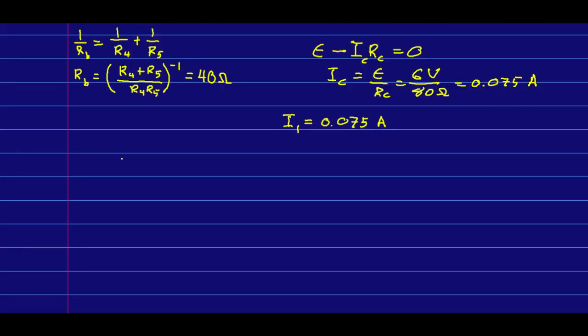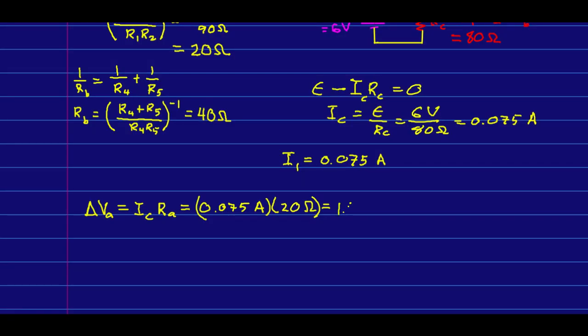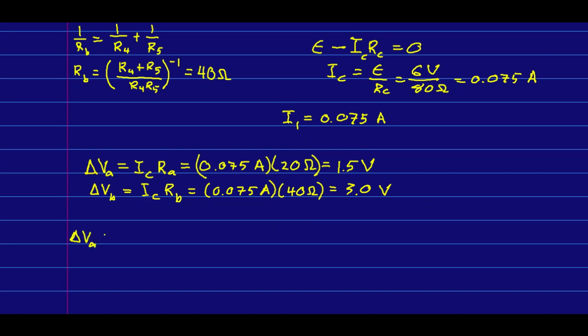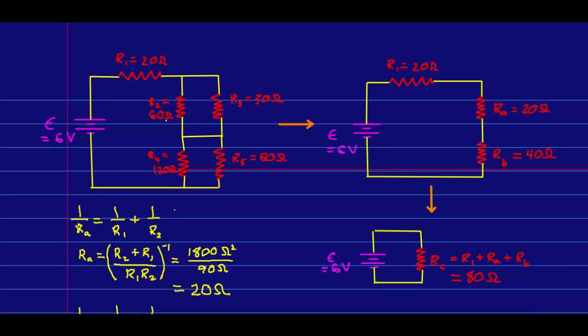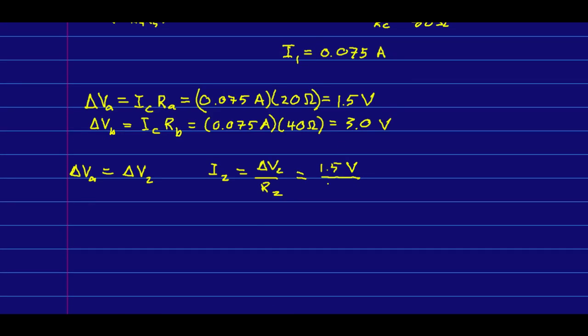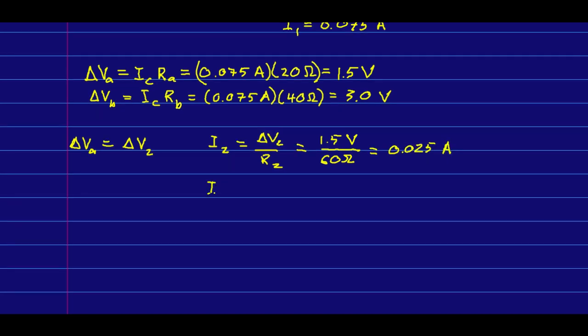However, this allows us to find the potential differences. So delta Va is going to be that current, which I'm calling Ic, times Ra. And similarly, the potential difference across Vb I can get with that current times its resistance. And so now I can solve for what I actually want, because I know, for example, that delta Va is equal to delta V2. And so I know that I2 is going to be, and so on for the others.